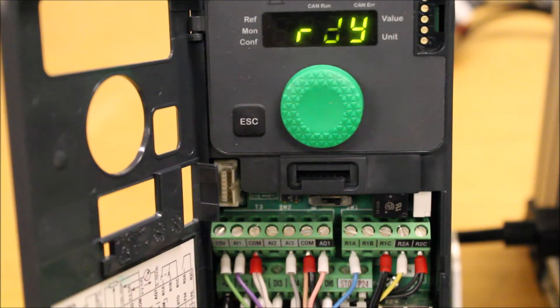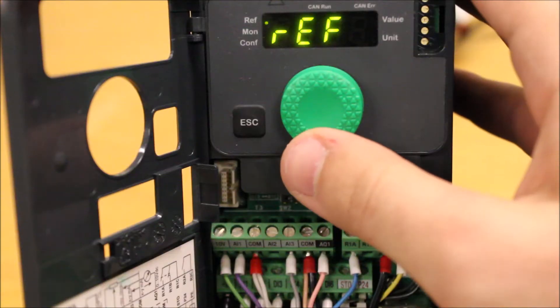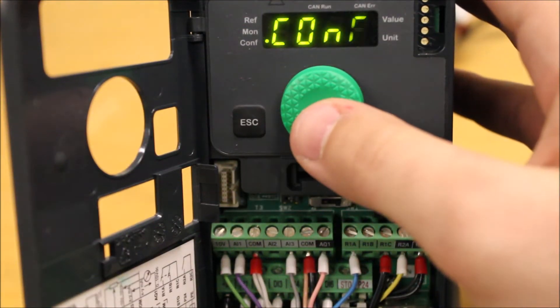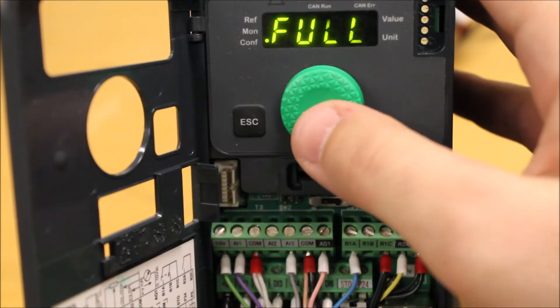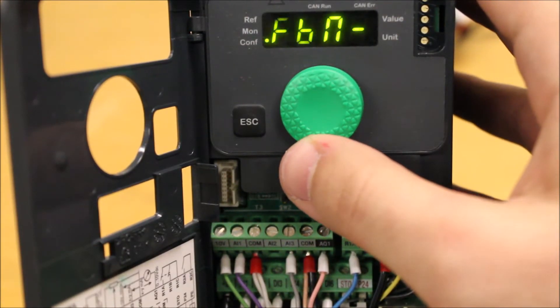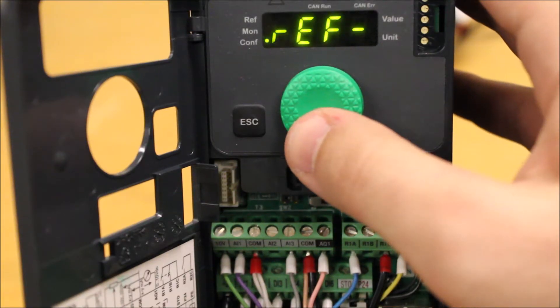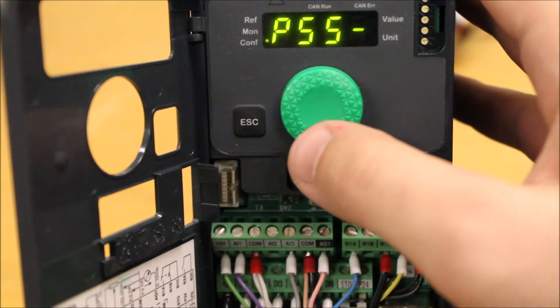Off the bat, let's show you how to get to that menu and how to program these in general. From the main display, press the Enter key, your dial. Go down to CONF, Enter. Go down to Full, Enter. Go down to FUN, Enter. And then go down to P55-, Enter.